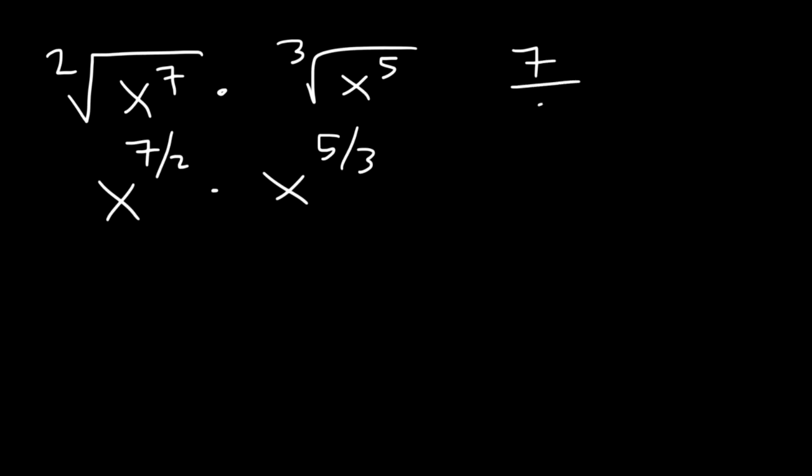Let's try one more example. Multiply the square root of x to the 7 times the cube root of x to the 5th. So first, let's change it to exponential notation. So that's going to be 7 over 2 and 5 over 3. Now let's add the two fractions. Let's get common denominators. Let's multiply this one by 3 over 3 and the other one by 2 over 2.